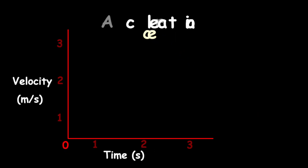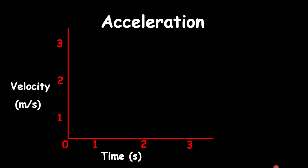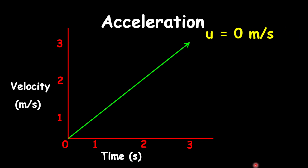Now let's look at acceleration. Acceleration is the increase in velocity over time. The graph will look like this, which means as you increase on the y-axis, you also increase on the x-axis. So let's put some numbers in play. Our initial velocity, which is the starting velocity at the start of this line, is zero. And the end of this line is three meters per second.